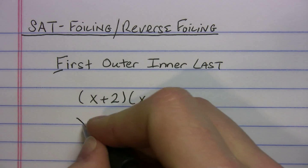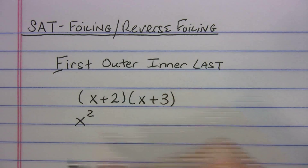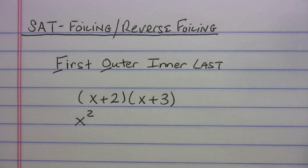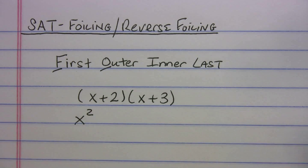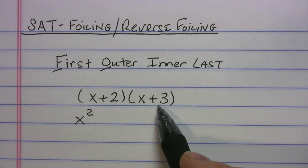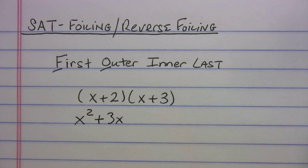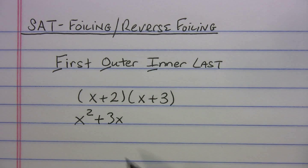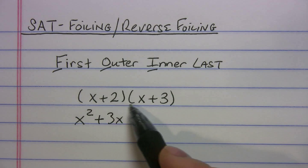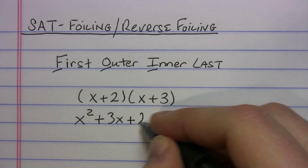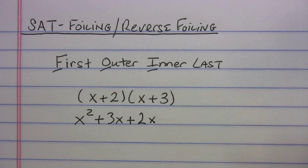x times x gives you x squared. Now let's do the outer terms — those are the terms on the outside: x times positive 3 gives positive 3x. Now let's do the inner terms, the terms on the inside: positive 2 times x gives positive 2x. I'm just writing down what I get as I go.